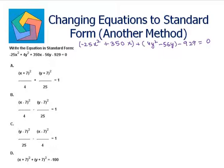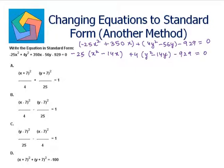I can take minus 25 common: (x squared minus 14x), plus 4 common: (y squared minus 14y), minus 929 equals 0. Now, 14 divided by 2 is 7, and 7 squared is 49. We will add 49 inside both parentheses, but when we subtract the balancing term it will be 49 times 25, which is 1225, and 49 times 4, which is 196.